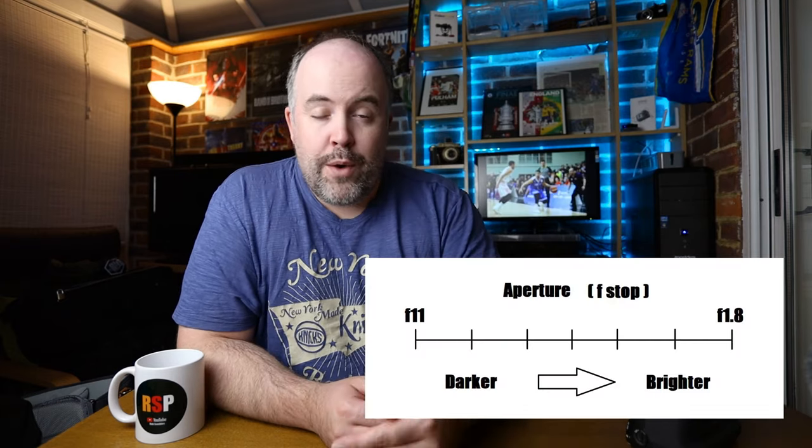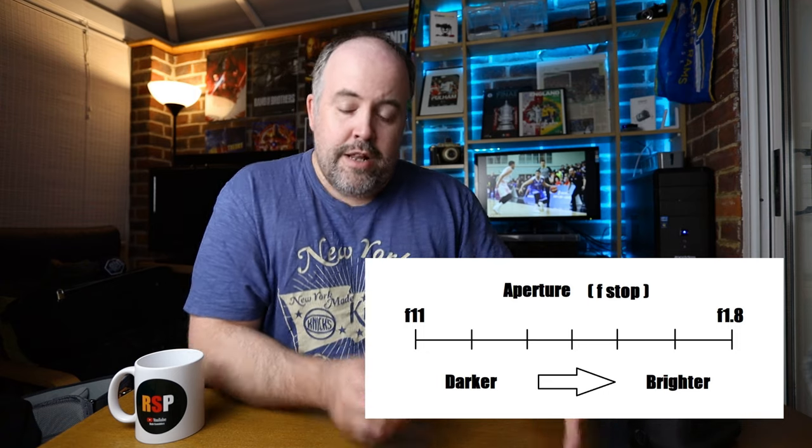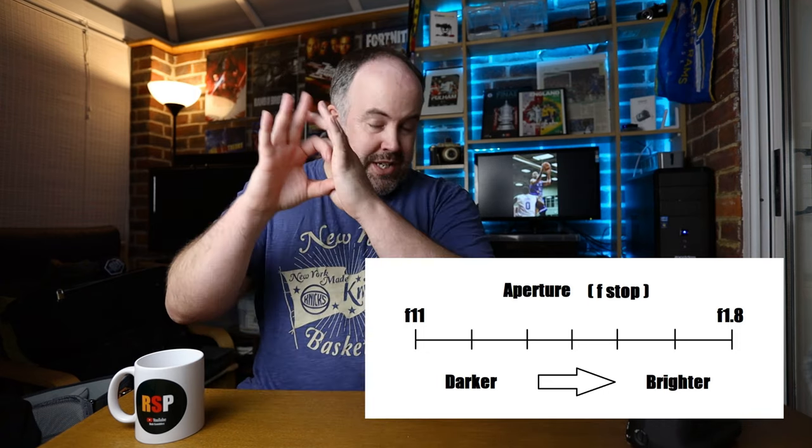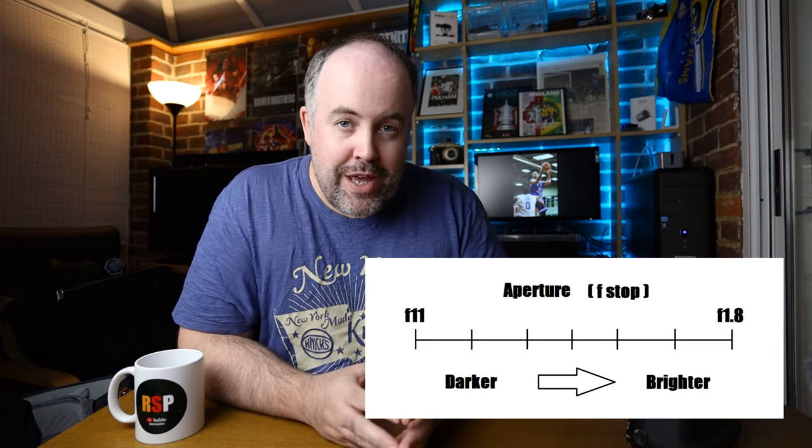The next thing is aperture. In very simple terms, the smaller number — which actually means the bigger hole within your lens, because there are blades that open and close — the smaller the f-stop number, the wider open those blades are. The smaller number means more light is being let into your lens, making your image brighter. The bigger number, which is a smaller hole, will make your image darker.